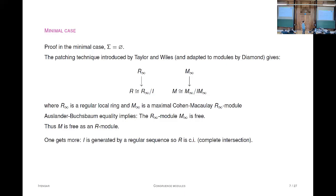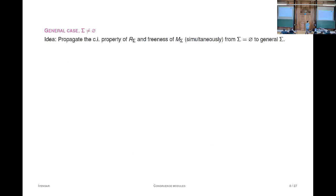In the Diamond-Wiles context, you get more: the ideal by which you're quotienting is generated by a regular sequence, so the deformation ring turns out to be a complete intersection. This is important in the next step—the passage from the minimal to the non-minimal context.